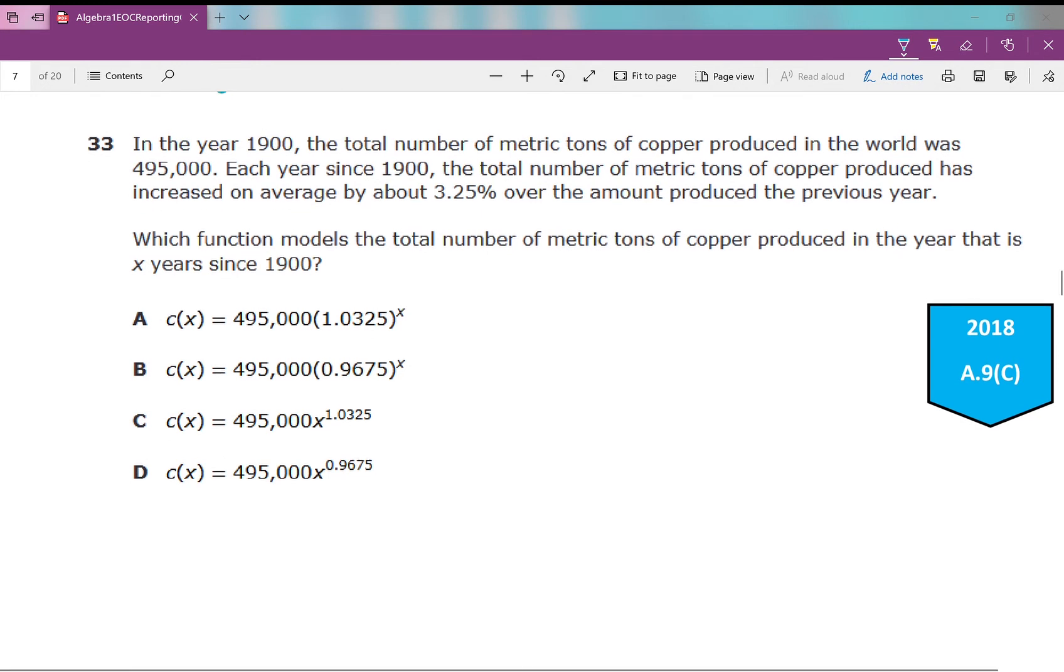Moving on to 33. In the year 1900, the total number of metric tons of copper produced in the world was 495,000. Each year since 1900, the total number of metric tons of copper produced has increased on average by about 3.25% over the amount produced the previous year. So it's increasing at a rate. Exponential growth. Automatically, that's what I'm thinking. It's increasing at a rate. Which function models the total number of metric tons of copper produced in the year that is x years since 1900?